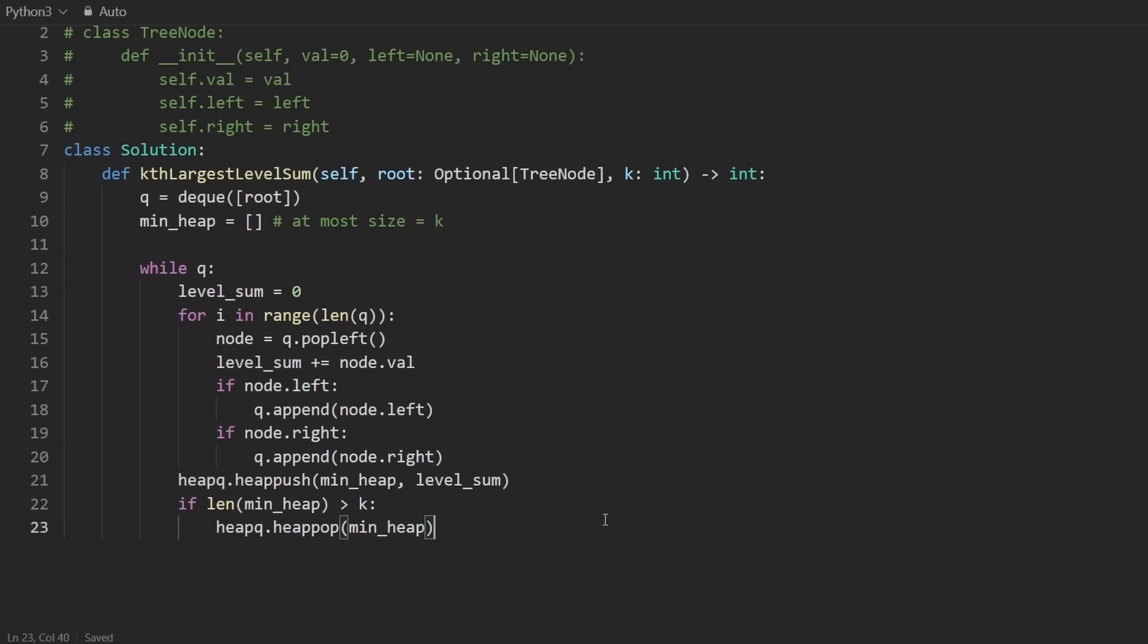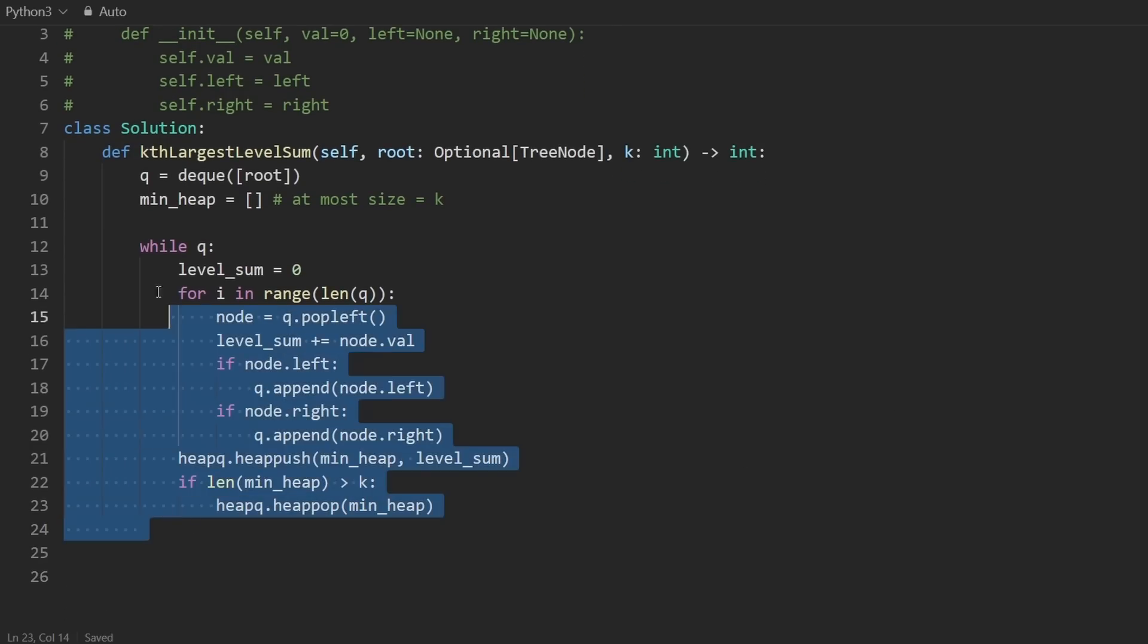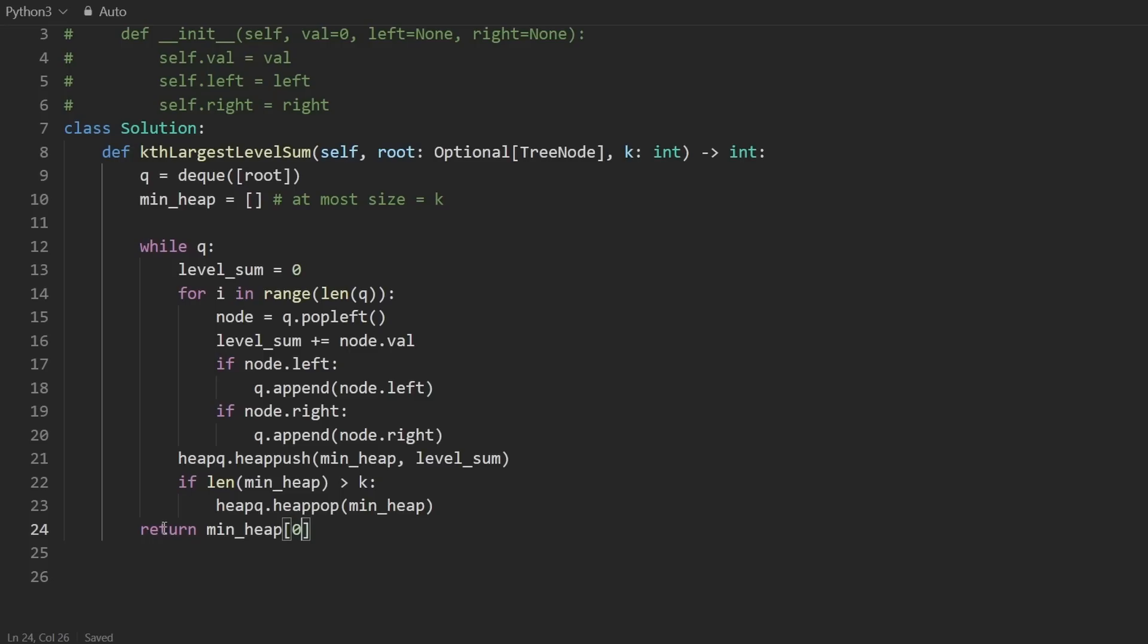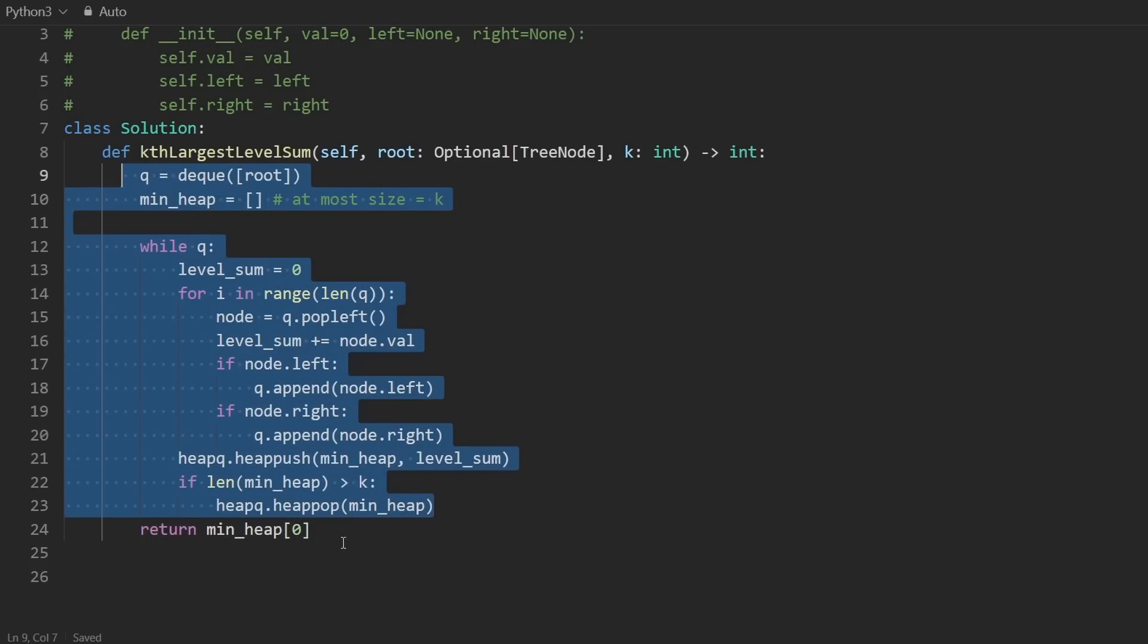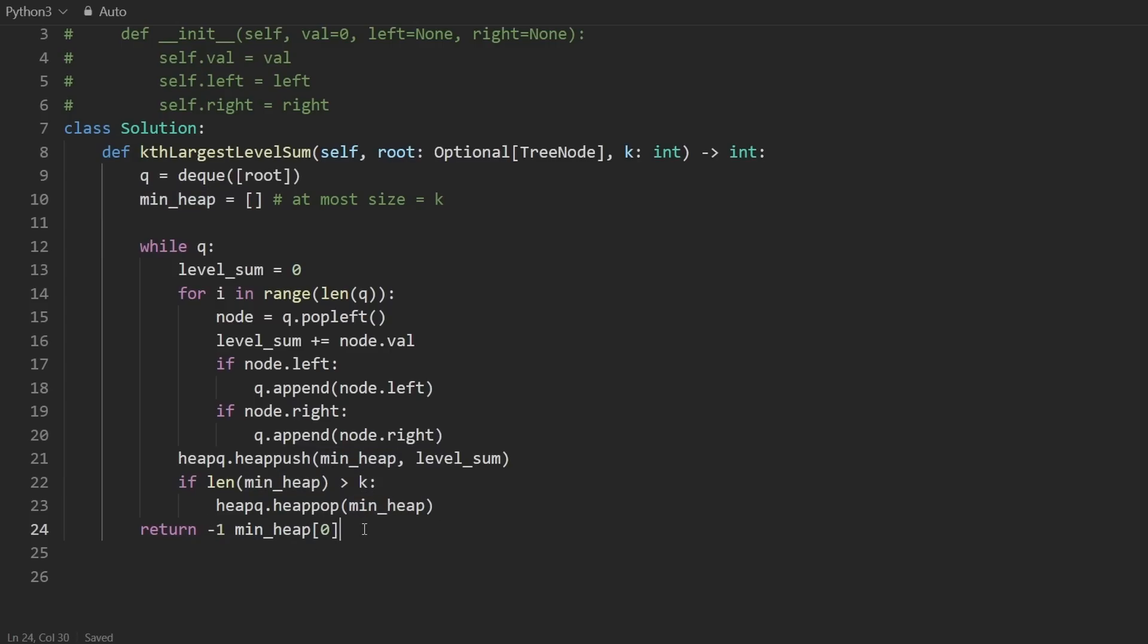We're almost done with this. At this point, you might think once we're done with all of this, what we can return is the minimum value in the min heap at the end of this. And in that case, what we would do is return this min heap at index zero. That's almost correct. But remember, if there aren't k levels in the tree, what we actually want to do is return negative one. So how do we know if there are k levels? Well, the size of the min heap, if it's less than k, then we return negative one, because that means we never even added k values to the min heap in the first place. So I'm going to handle that with a ternary operator: return negative one if length of min heap is less than k, else return the kth smallest integer.